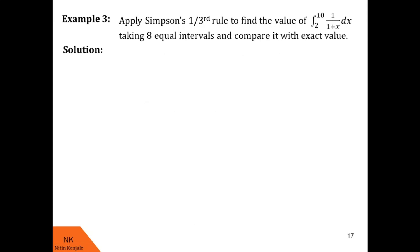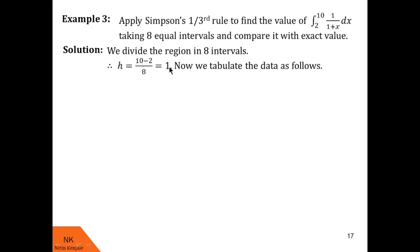Now let us proceed to the next example. Here we are asked to apply Simpson's one-third rule to find the value of the integral of 1/(1+x)dx over the limit 2 to 10, taking 8 equal intervals, and to compare it with the exact value. So there are two parts: first find the value using Simpson's one-third rule, then find the exact value and compare. Here h = (10−2)/8 = 1.